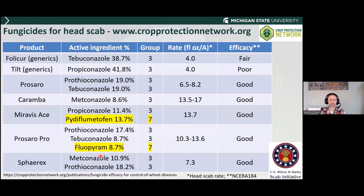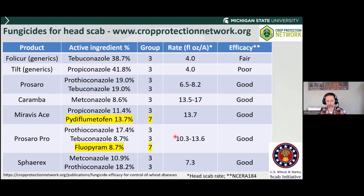In terms of products for head scab management, the landscape has changed a lot over the last few years. For a long time we were really looking at Prosaro and Karamba as our primary products with good efficacy against head scab. More recently, Syngenta released Miravis Ace, which includes another mode of action within the mix. Bayer has recently released Prosaro Pro, building on Prosaro, and BASF has Spherix. Now that we've been through two to three years of testing, we feel they all provide quite good control of head scab. One important note: do not use a fungicide containing a strobilurin — that's a Group 11 fungicide — as it can actually exacerbate the amount of mycotoxin that head scab results in.